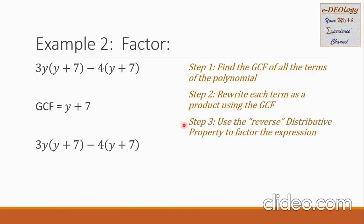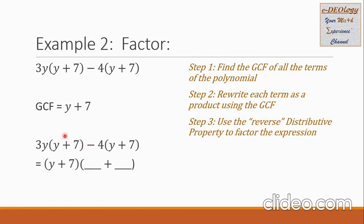In step 3, use the reverse distributive property to factor the expression. We are going to remove the GCF first, so we expect two terms in the second factor. Looking at the first group, 3y will remain after removing the GCF, so we write 3y. And then plus. For the second blank, the remaining term after removing the GCF is negative 4, so negative 4 comes down here.